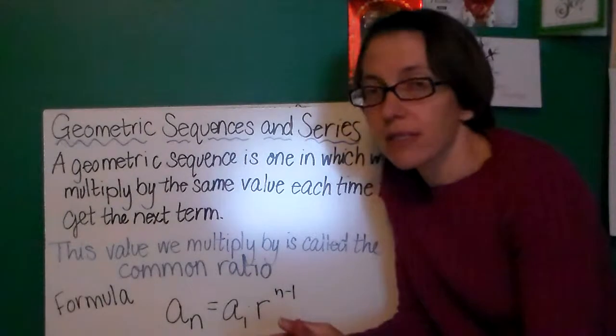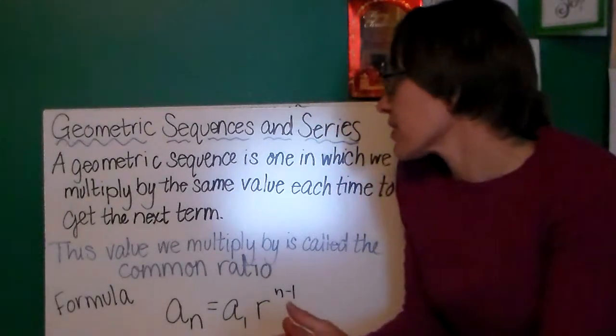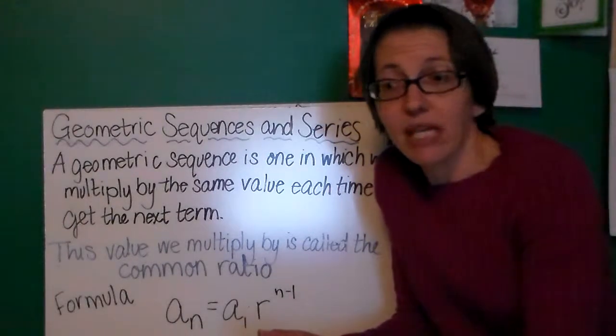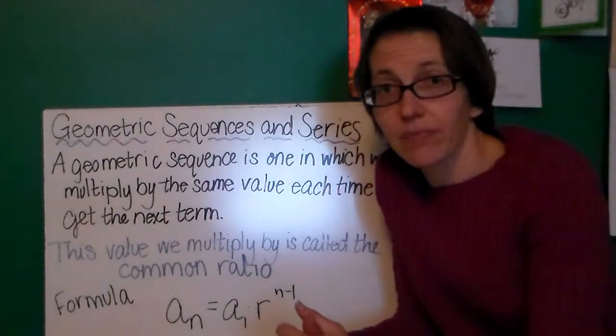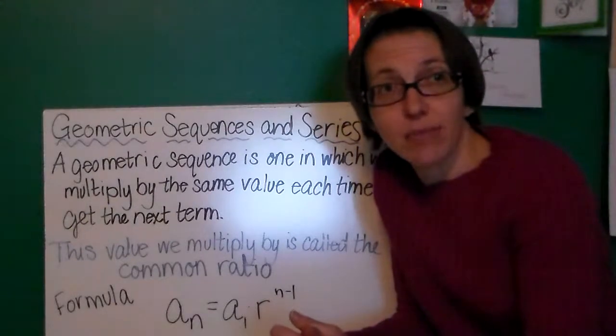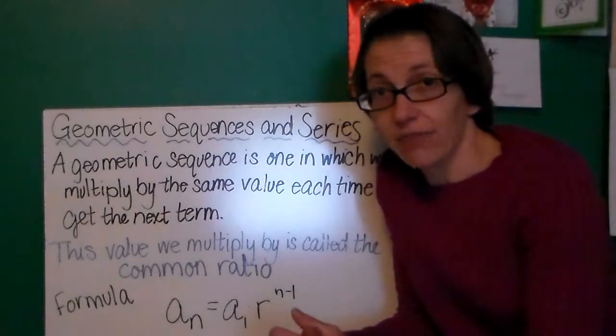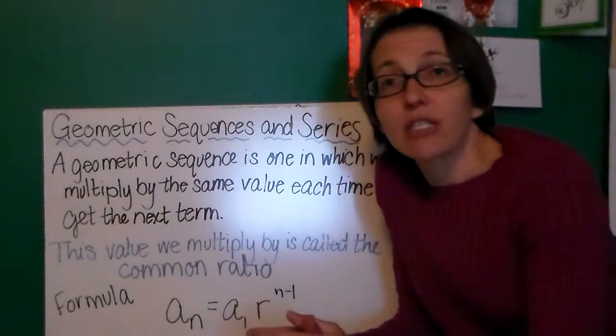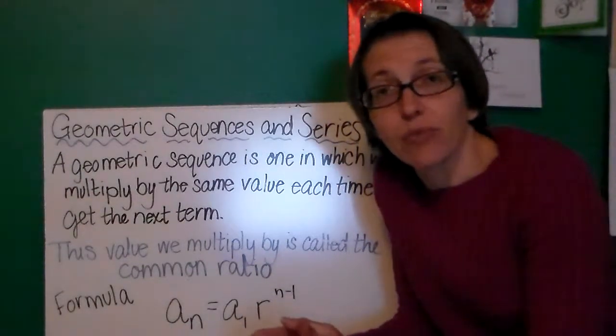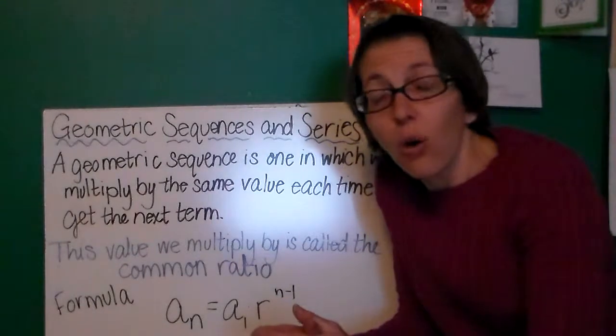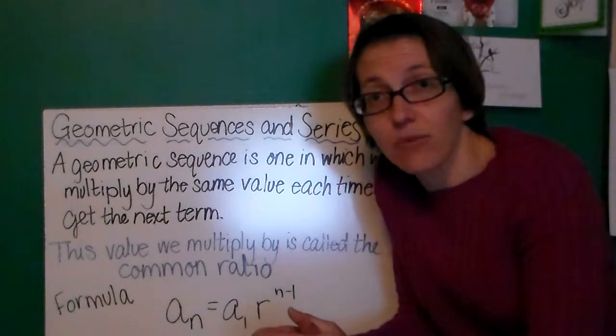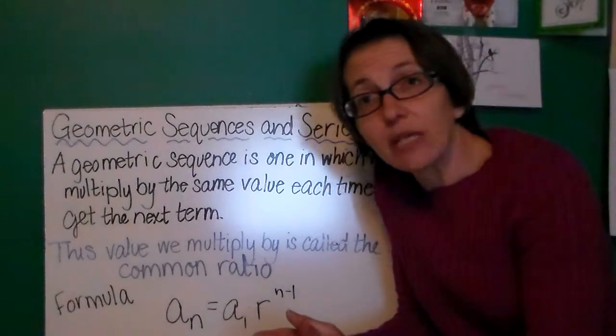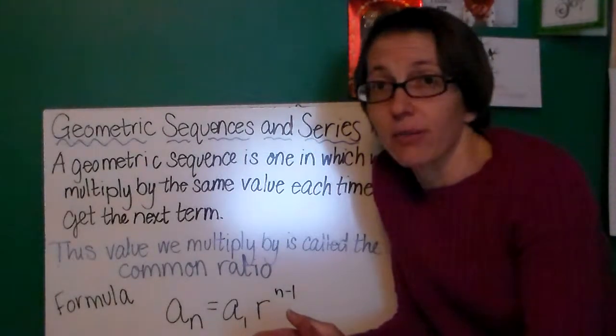With the geometric series, it's going to be similar, except in a geometric sequence, we multiply by the same value each time in order to get the next term. Now, because we can multiply by positive or negative numbers, or we can multiply by numbers that have an absolute value greater than 1, or numbers that have an absolute value less than 1, that means our values can increase or decrease as we go between terms.